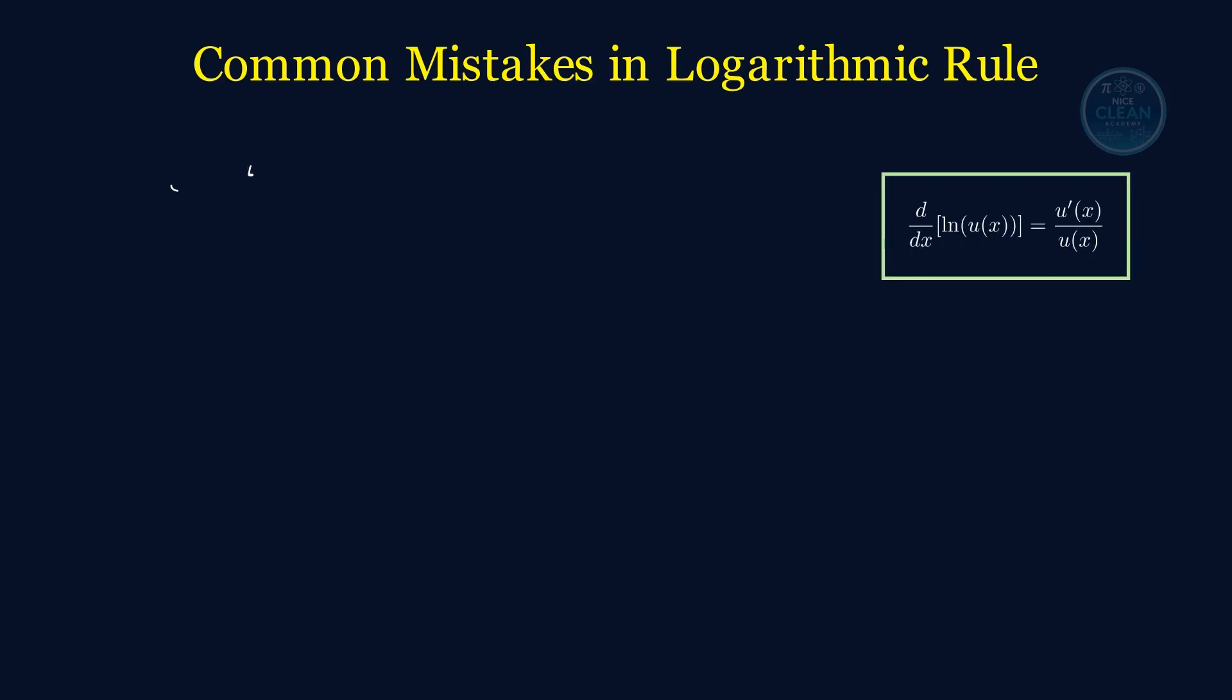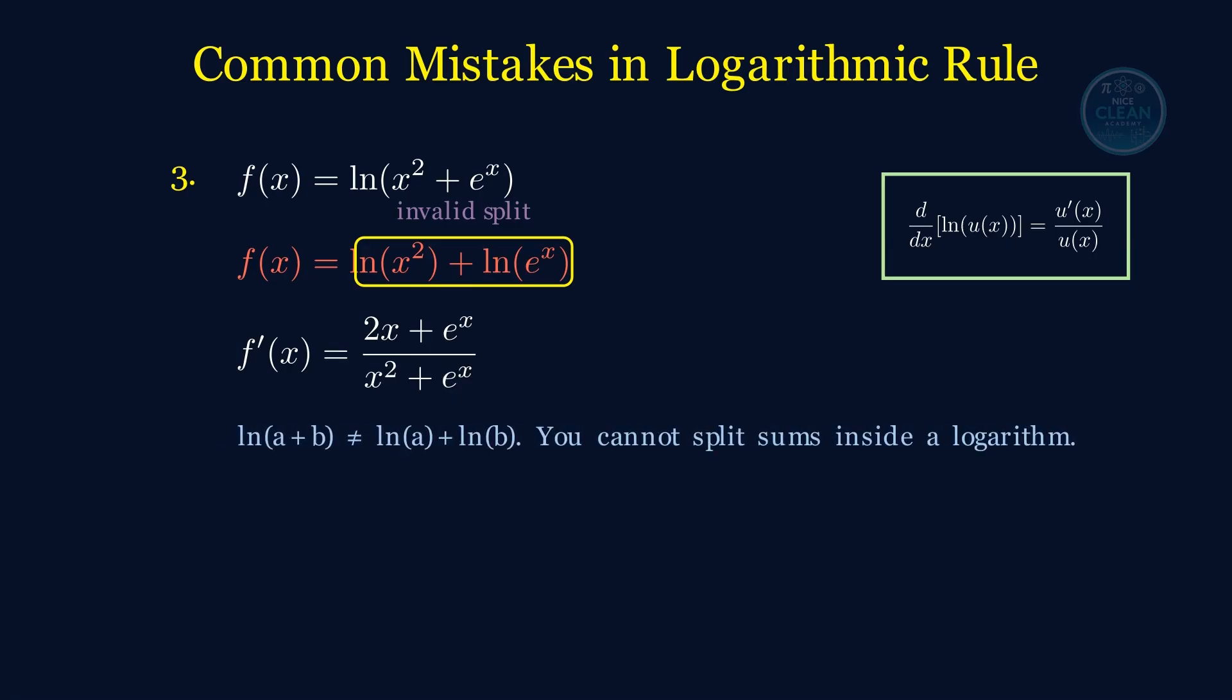This one's a classic. We've got f of x equals the natural log of x squared plus e to the x. And some students try to split it: ln of x squared plus ln of e to the x. But nope! ln of a plus b does not equal ln of a plus ln of b. That rule only works for multiplication or division, not addition. So we keep it together, differentiate the top, 2x plus e to the x, and divide by the whole thing, x squared plus e to the x. That's the correct derivative.